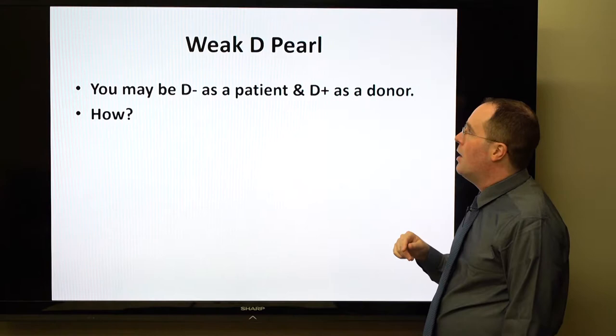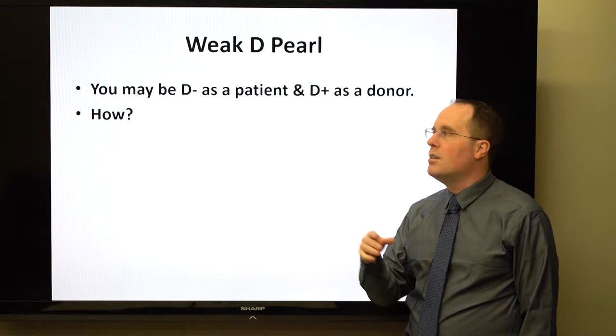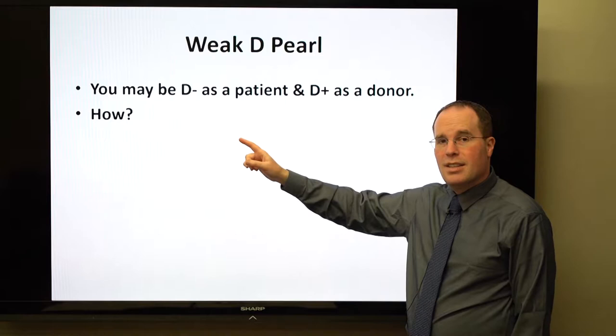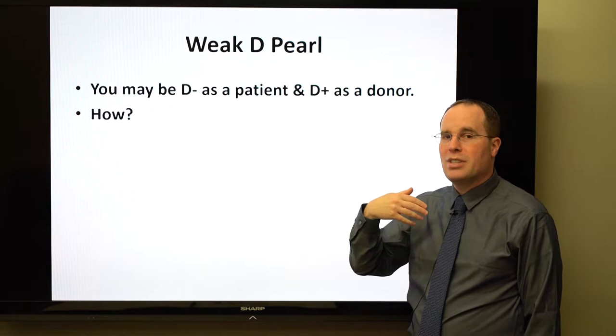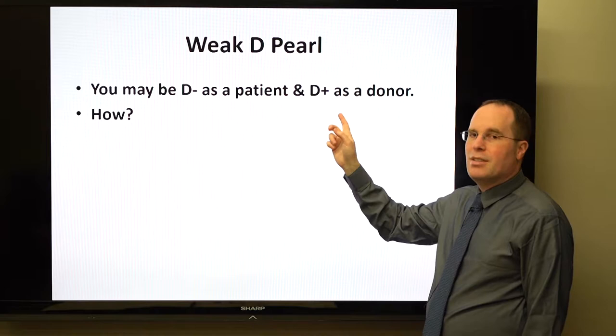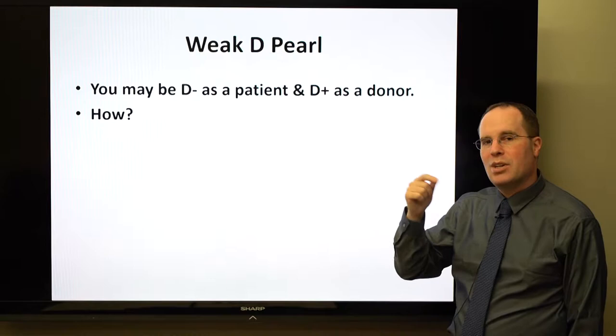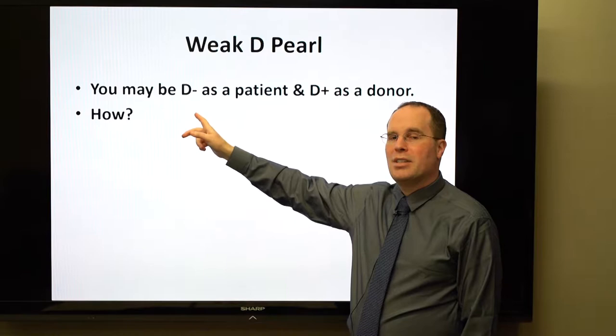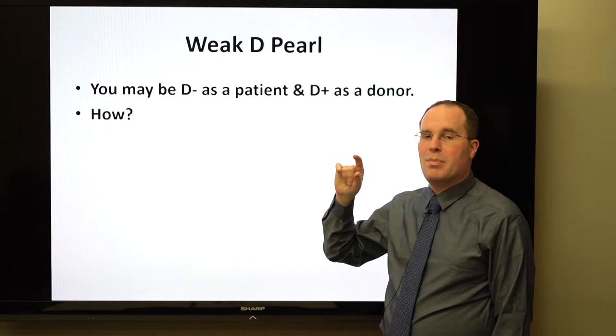This creates a practical curiosity in blood donor centers: a donor may insist they are D-negative (e.g., O-negative), but when the donor center types them they come out D-positive. This happens because in the patient setting we don't add the AHG second step, so weak D is missed. In the donor setting, we do add AHG and pick up the weak D, which is then labeled D-positive.